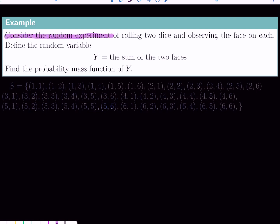Consider the random experiment of rolling two dice and observing the face on each. Define the random variable Y as the sum of the two faces. Find the probability mass function of Y.